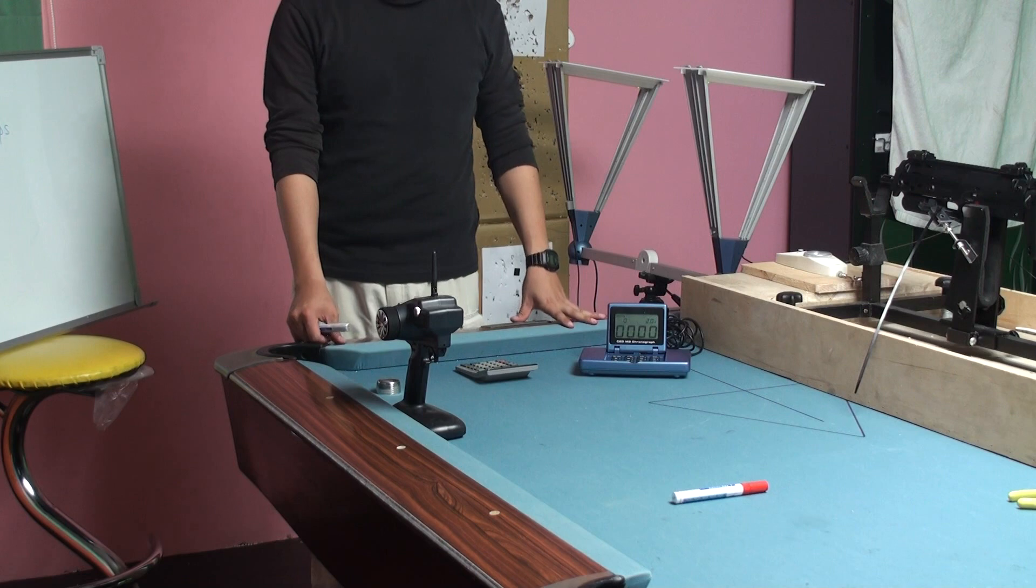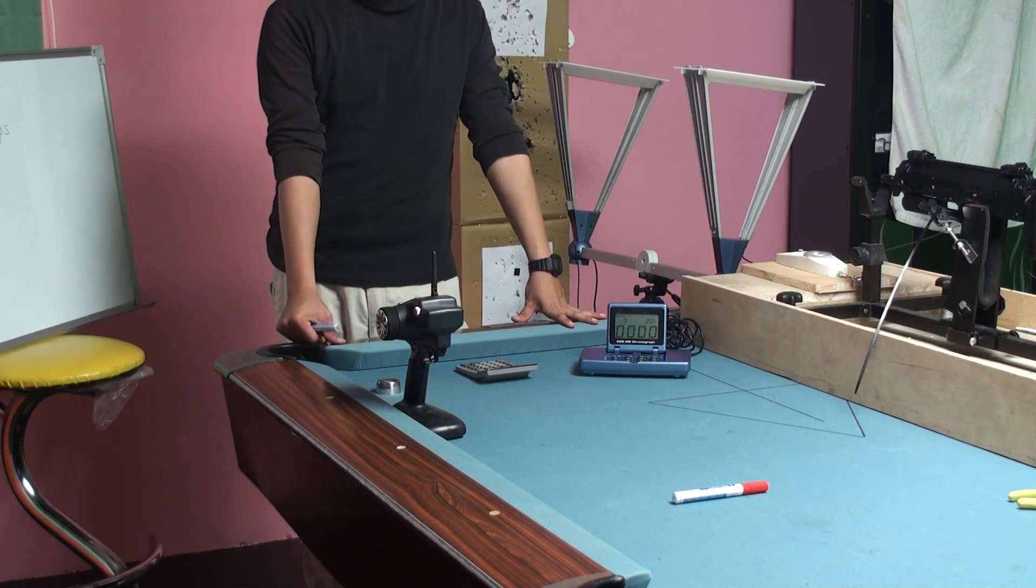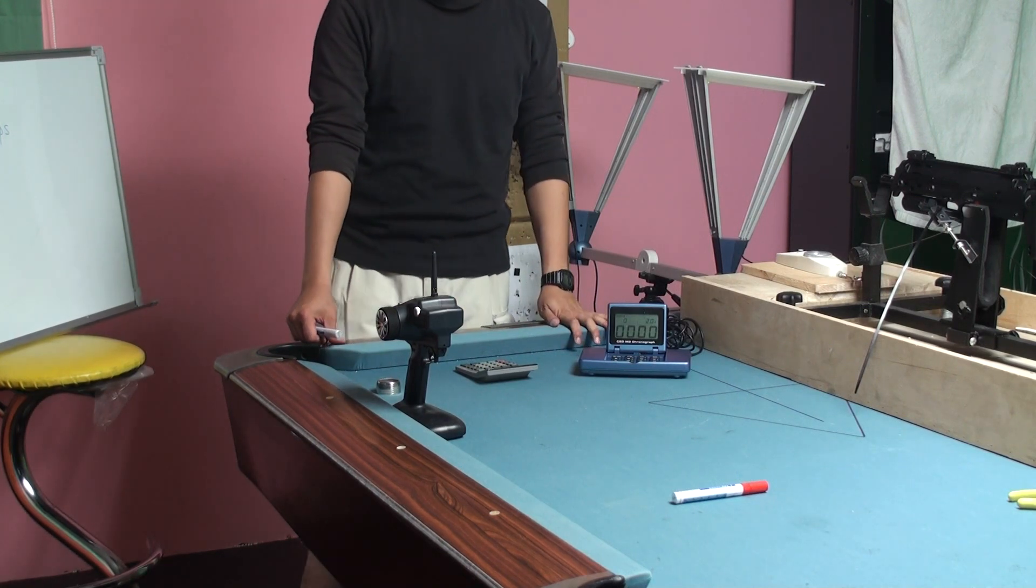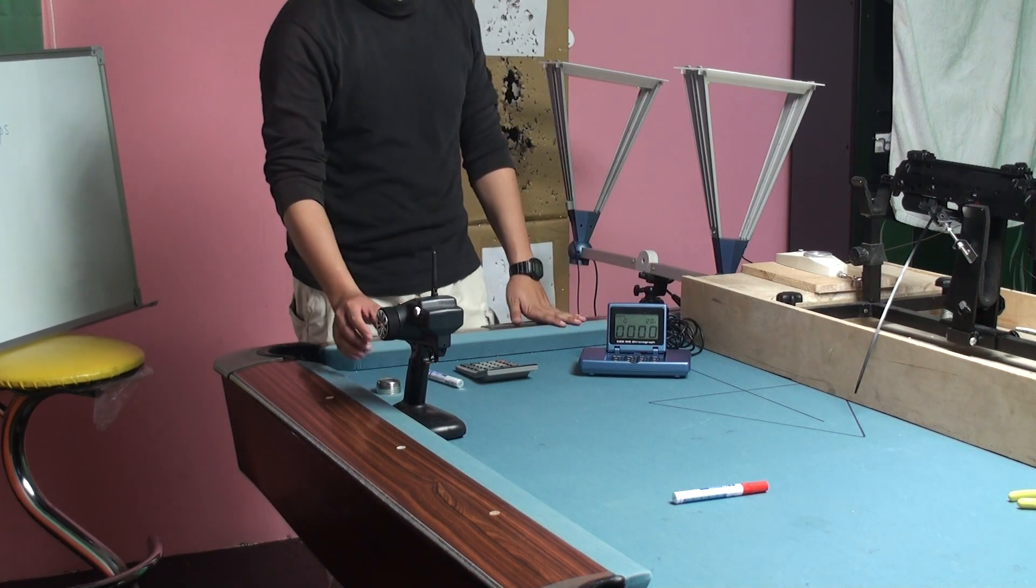And now we are going to test the VFC MP7A1 airsoft machine gun. We use the 0.2 BB and ring gates for a free run.